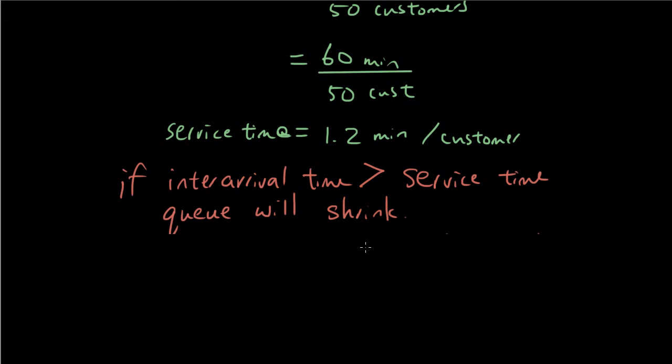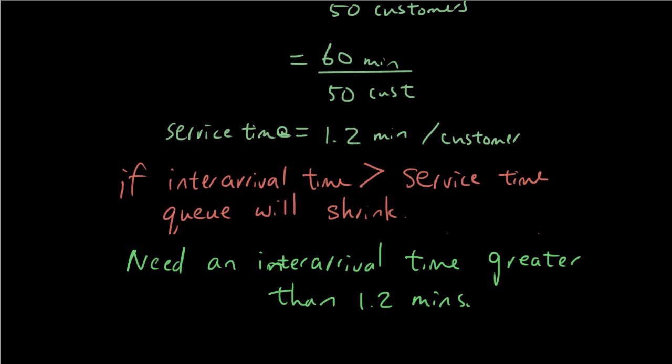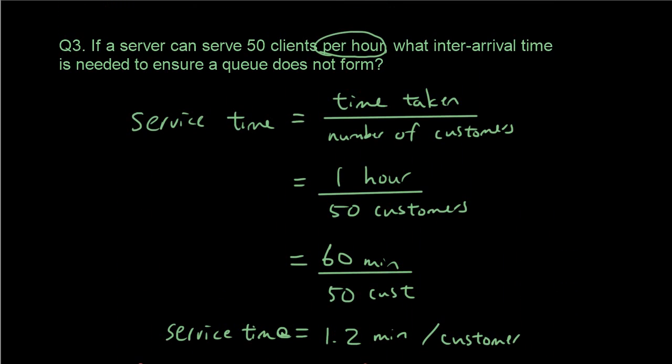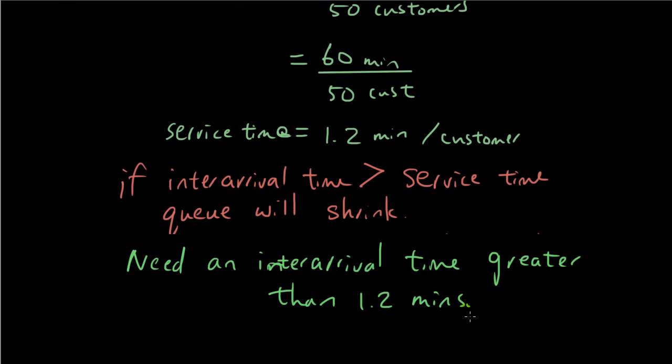So we basically need an inter-arrival time greater than 1.2 minutes, because it takes you 1.2 minutes to serve a customer. So if customers are arriving with an inter-arrival time bigger than 1.2 minutes, then gradually the queue will shrink and the queue is never going to grow. Thanks for watching guys. See you next time. Bye.